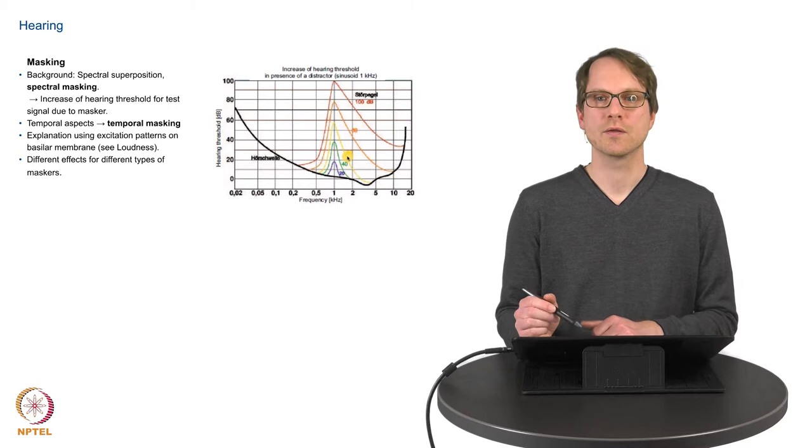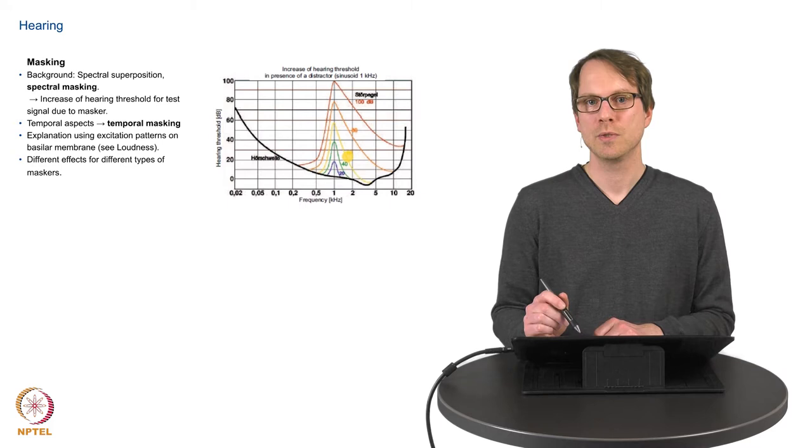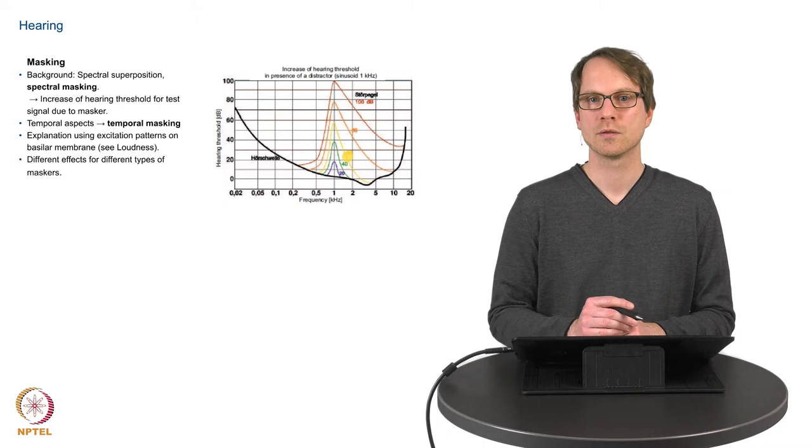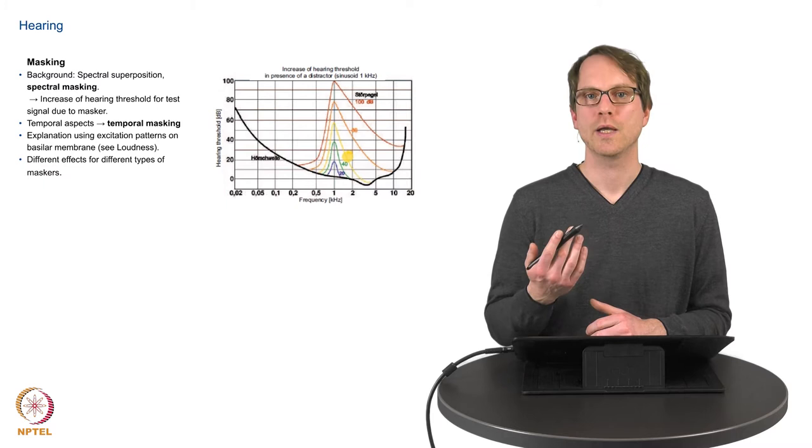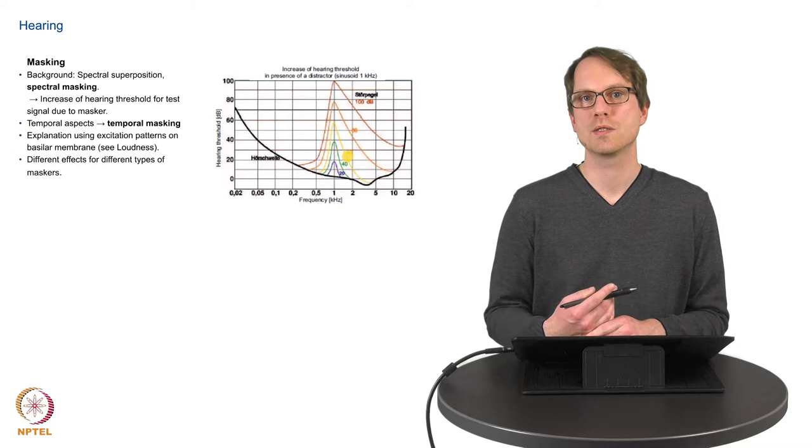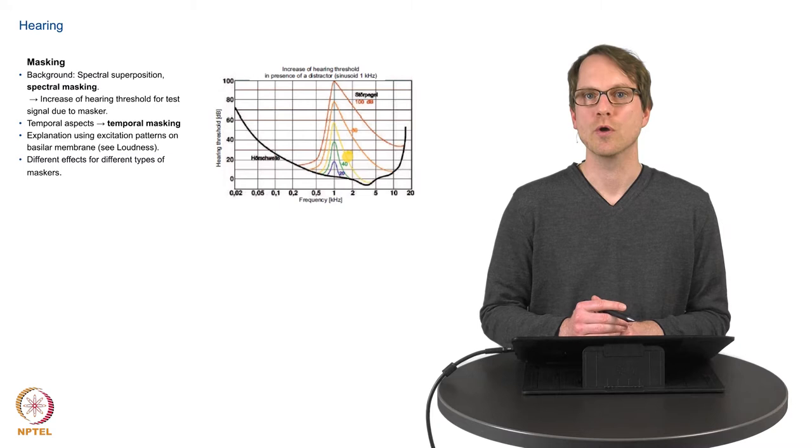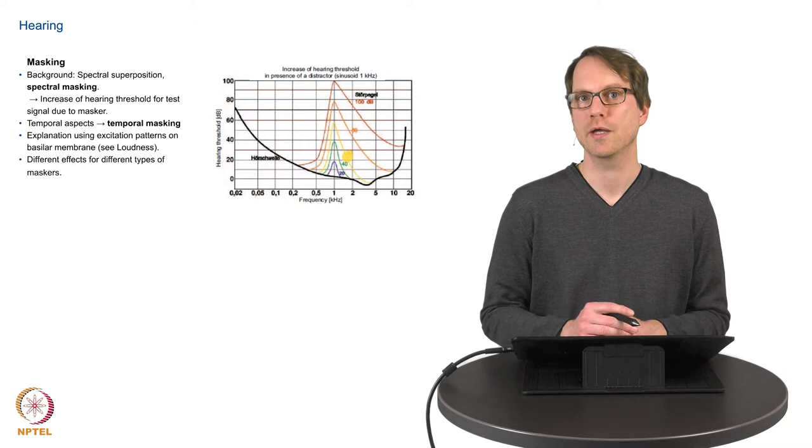And this masking, this spectral masking is directly related to the basilar membrane because the certain cells, the locations which are stimulated, are evaluated together. So they trigger and fire information to the brain. And if there is a strong movement going on, a strong excitation of the basilar membrane, a related sound with lower intensity which is related in frequency to this so-called masker will not be perceived anymore as a tone of its own. This will be not heard then.